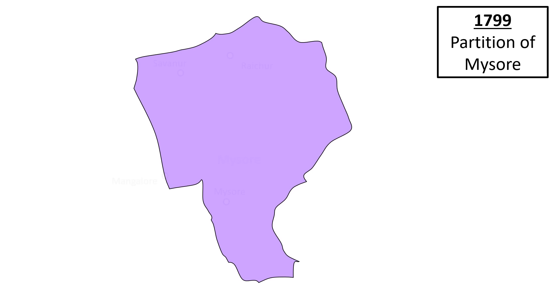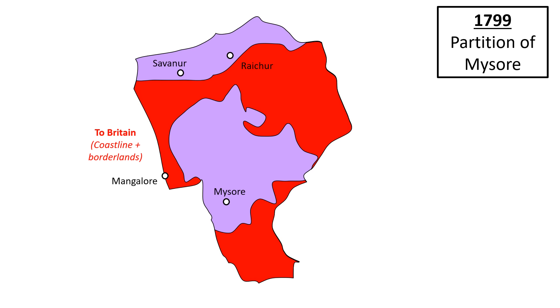Mornington had come to British India with two policy directions in mind — first, territorial expansion, and second, reorganizing Indian society to establish a rational and Europeanized order. As a recently conquered territory, Mysore was the perfect testing ground for both. First came the territorial expansion. Accordingly, the British first annexed Mysore's coastline, then awarded border territories to Hyderabad and the Maratha Empire. The remainder was to be turned into a subsidiary ally, and now British officials were free to focus on their other work of societal reorganization.